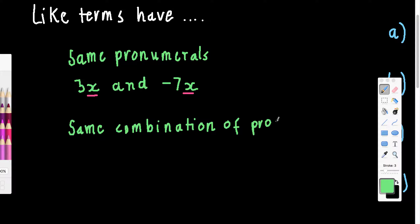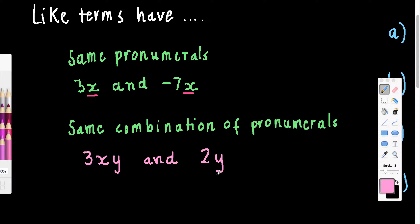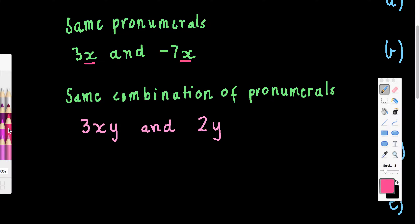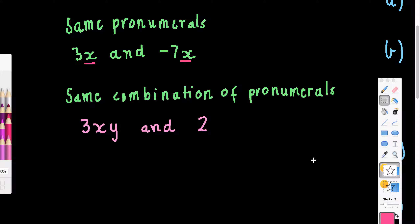For example, if you've got 3xy and 2y, these are not like terms. This one has xy and this one only has y, so I can't collect them together. The value of xy may not be the same as the value of y — it's likely it isn't. For the terms to be like, they need to have the same combination, so it also needs to have xy.